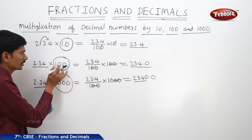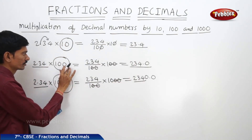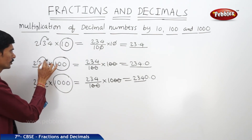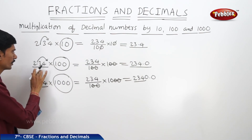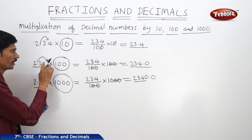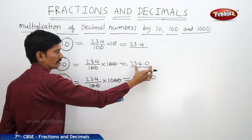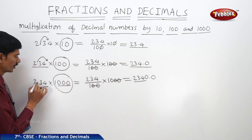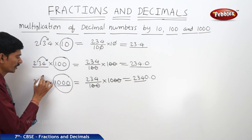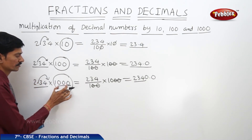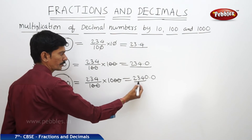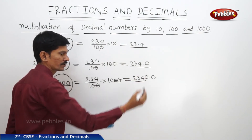In 100 there are 2 zeros, so the decimal point is shifted 2 digits to the right — it became 234.0. In 1000 there are 3 zeros, so the decimal point is shifted to the right by 3 digits — we get 2340.0. So, we got the same product 2340.0.